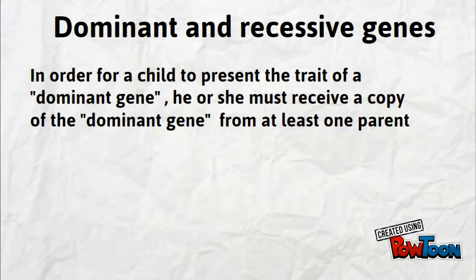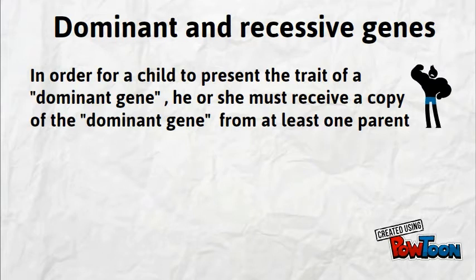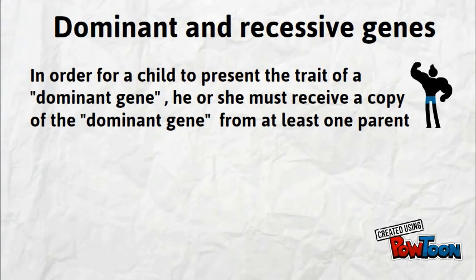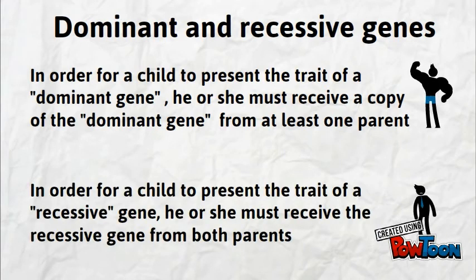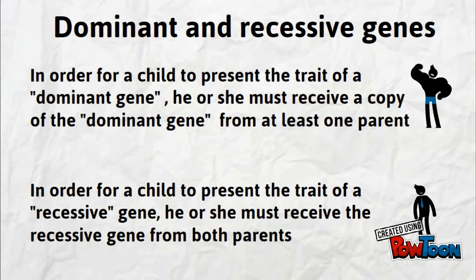Dominant and recessive genes. In order for a child to receive the traits of a dominant gene, he or she must receive a copy of the dominant gene from at least one parent. However, in order for a child to present the trait of a recessive gene, he or she must receive the recessive gene from both parents.